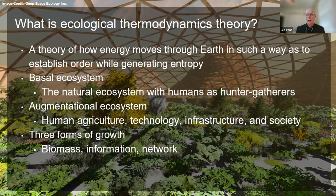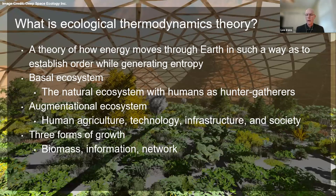Let's get familiar with a few terms. The basal ecosystem of Earth is the natural ecosystem in which humans evolved as hunter-gatherers. Once humans established agriculture about 10,000 years ago, they started creating what we call an augmentational ecosystem made up of agriculture, technology, infrastructure, and human society. We use the terms 'basal' and 'augmentational' in preference to 'natural' and 'artificial' to avoid implying that humans and all their technology are not part of the evolved natural world — humans and their technology exist because of evolution, just as termites and their termite mounds exist because of evolution.